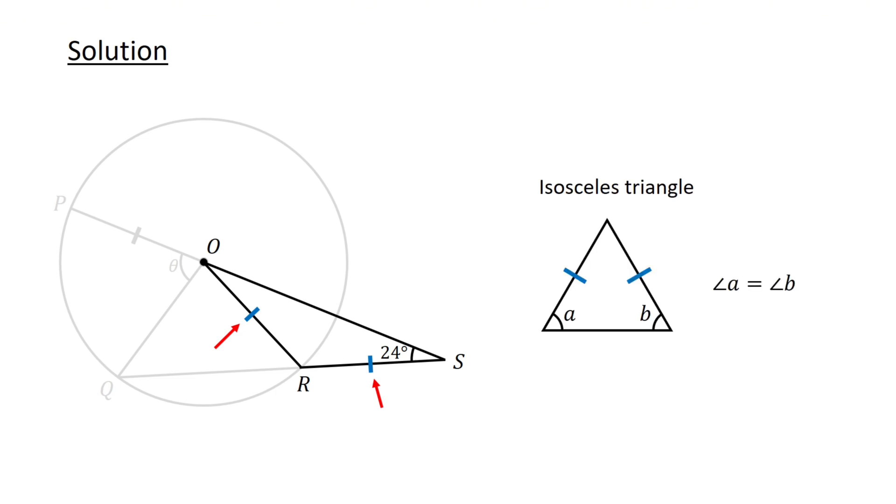Recall that the base angles of an isosceles triangle are equal. The base angles of triangle OSR are angle ROS and angle OSR. Therefore, angle ROS equals 24 degrees.